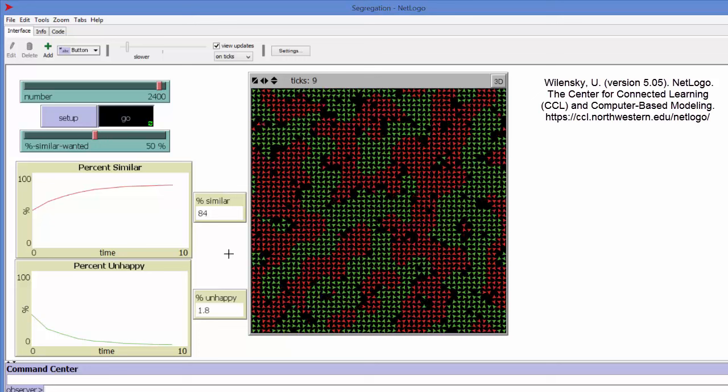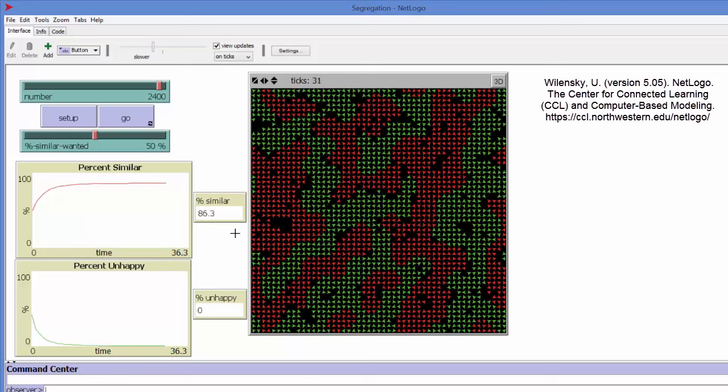You can see an extreme level of segregation setting in. 85% of the red ones are next to red ones, and 85% of the green ones are next to green ones. The micro motive at the individual level was 50%, but the macro pattern that emerges from this collective dynamic is a much more segregated society. Now that we reach equilibrium, everybody is eventually happy. We have a very segregated society. Nothing moves anymore, everybody is happy.